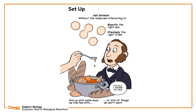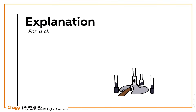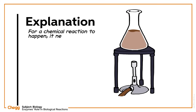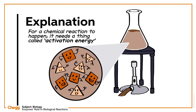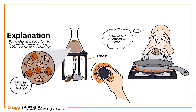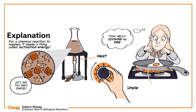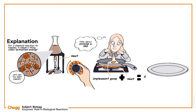The answer was discovered in part in 1833 by a French chemist called Anselm Payen, and it involves proteins called enzymes. In order for a chemical reaction to happen, it needs to surpass something called the activation energy. Typically, this energy is supplied in the form of heat. Think about cooking an egg — when you crack it into the pan, it's a rather unpleasant goop, but soon, with some heat, chemical reactions happen that turn it into a delicious breakfast.